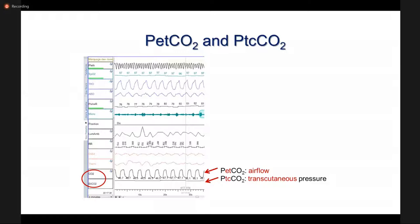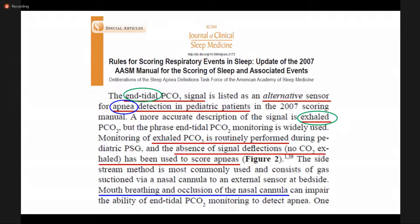One is end-tidal CO2, which measures the CO2 content in the expired air. The other is transcutaneous CO2, where we measure the carbon dioxide pressure in the skin that is warmed and arterialized to reflect the value of CO2 in the circulation. These are two different ways to monitor CO2 that are not comparable. According to the American Academy of Sleep Medicine, end-tidal CO2 is listed as an alternative sensor for apnea detection because it is a flow signal related to the amount of exhaled air.